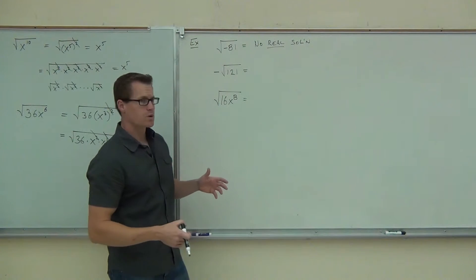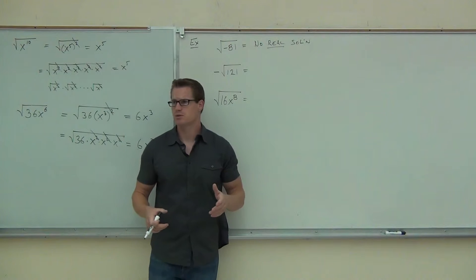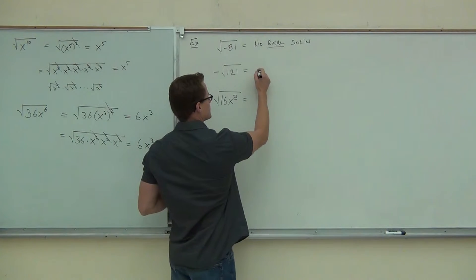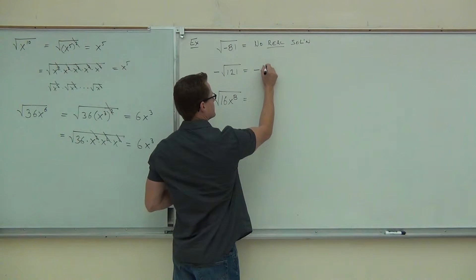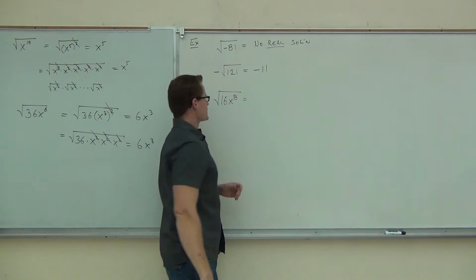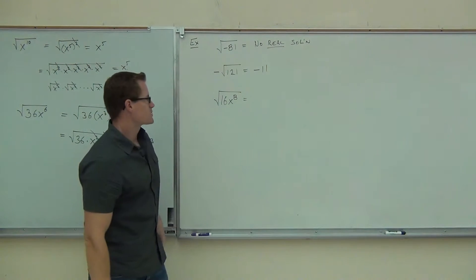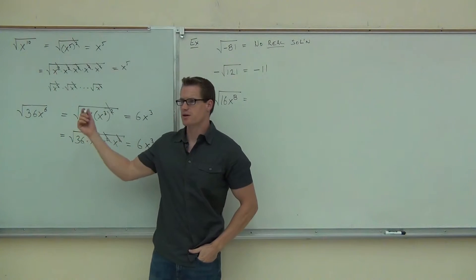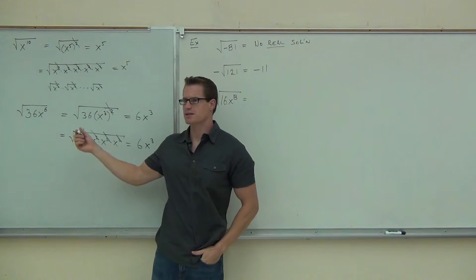Negative square root of 121 — how much is that? That's exactly right. And 16x to the 8th — we're going to do this process over here, one of these processes.